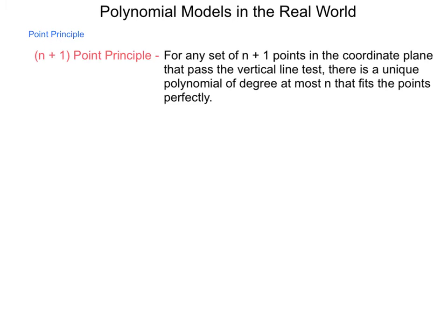It states, for any set of n plus 1 points in the coordinate plane that pass the vertical line test, there is a unique polynomial of degree at most n that fits the points perfectly.